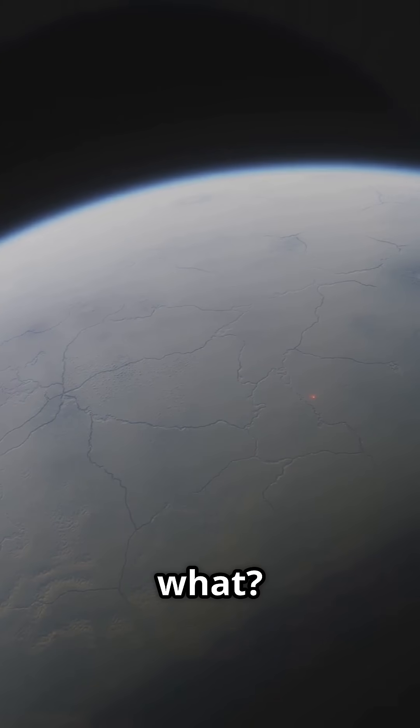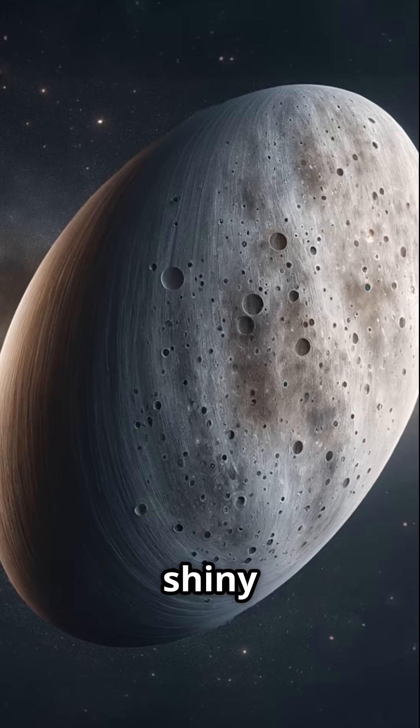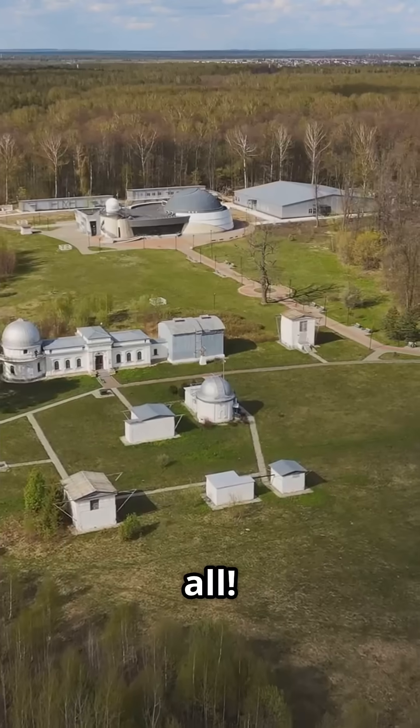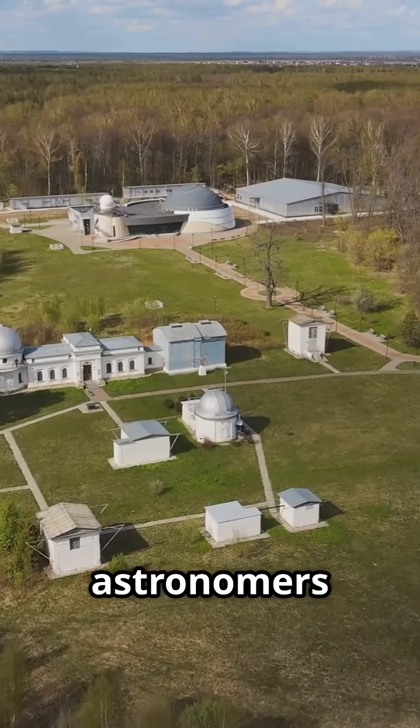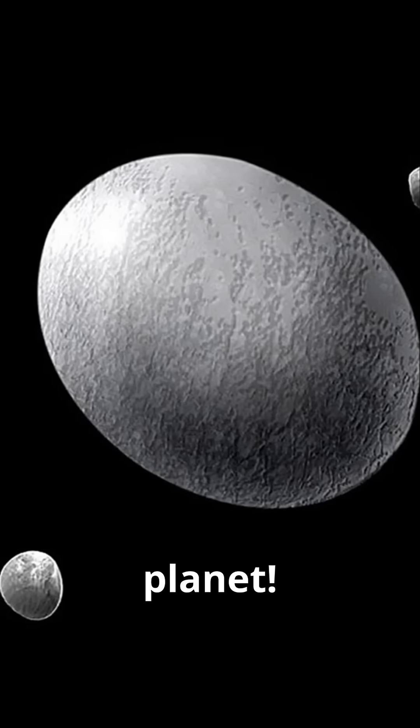And guess what? Haumea's surface is covered in crystalline water ice, reflecting sunlight and giving it a bright, shiny look. But that's not all. In 2017, astronomers discovered it has a ring, yes, a ring around a dwarf planet.